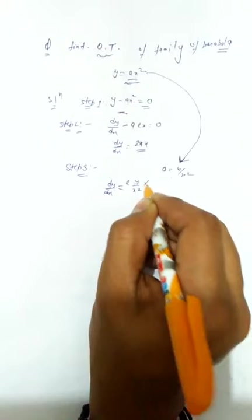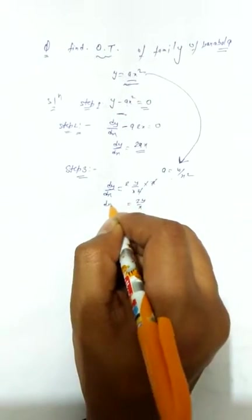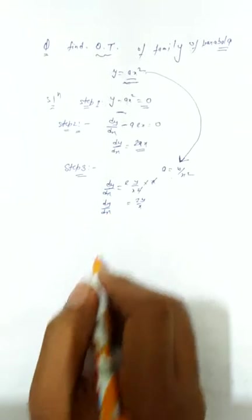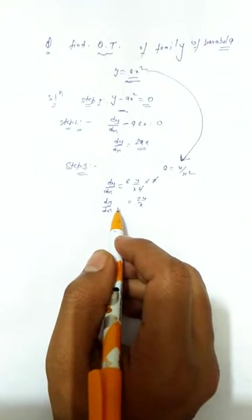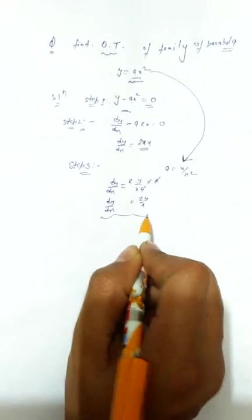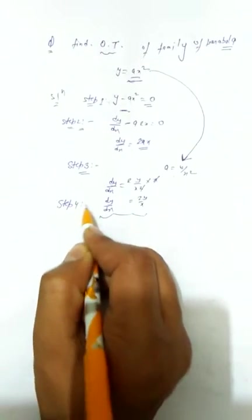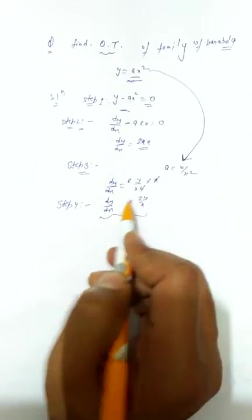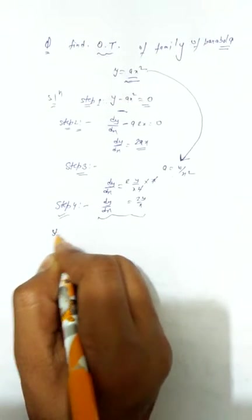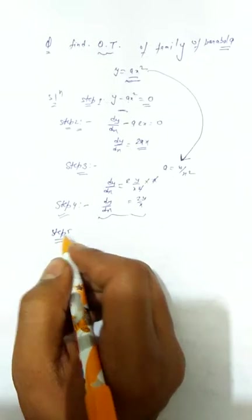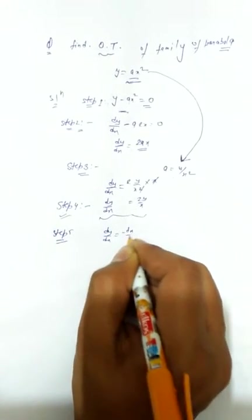Step 4 is the differential equation we just obtained after eliminating the constant. Step 5: Replace dy/dx with -dx/dy for the orthogonal trajectory.